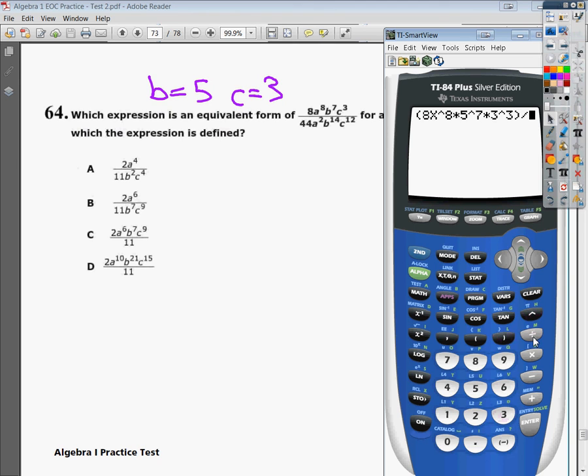And then I need to divide by the denominator, which goes in parentheses as well. 44 X to the second power, because our X value and our A are the same, times, and our B value is 5, so 5 to the 14th, times C to the 12th. So we said C was 3, so 3 to the 12th power. Close that parentheses there. Hit enter. And I get this number.